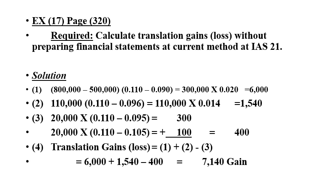Step two: net income times the current rate minus the historical rate. Net income is 110,000, times the rate at December 31, 0.110, minus the average for year one, 0.096. The result is 110,000 times 0.014, equaling 1,540.